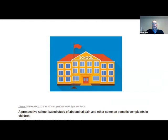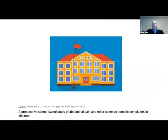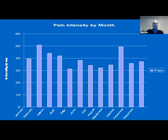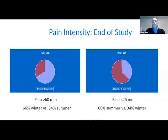If you go to a school, either in Pittsburgh or Chicago where I have done studies, and you ask children whether they have pain every single week, you're going to find that 32 to 46% of children will have at least one episode of abdominal pain. If you look at the intensity of pain — the x-axis shows the month of the year and the y-axis intensity — there is a trend showing more pain in winter months than summer months. Not only is there more pain, but the outcomes of treatment of children also differ between winter and summer.